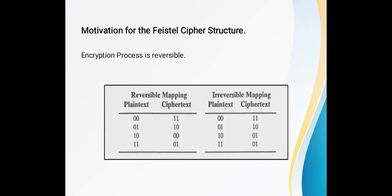Now, the motivation to use the Feistel cipher structure. The main motivation is that the encryption process is reversible — meaning if we produce cipher text out of plain text, that cipher text must be reversible, so that we can recover the message from it. This is the actual reason and main motivation for using the Feistel cipher structure. We can understand this using two tables.